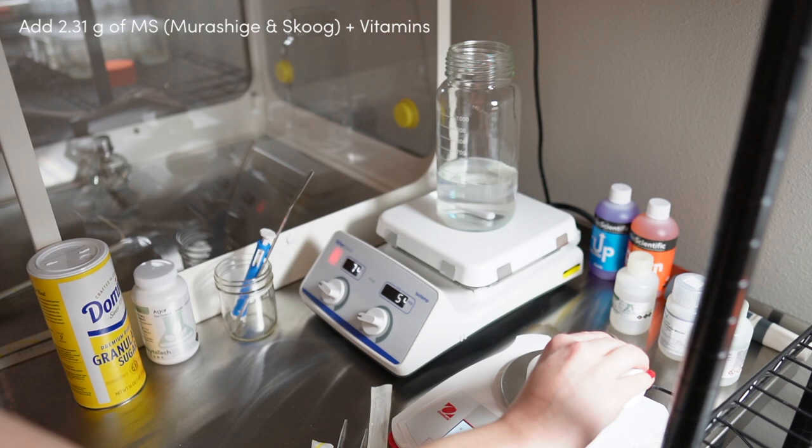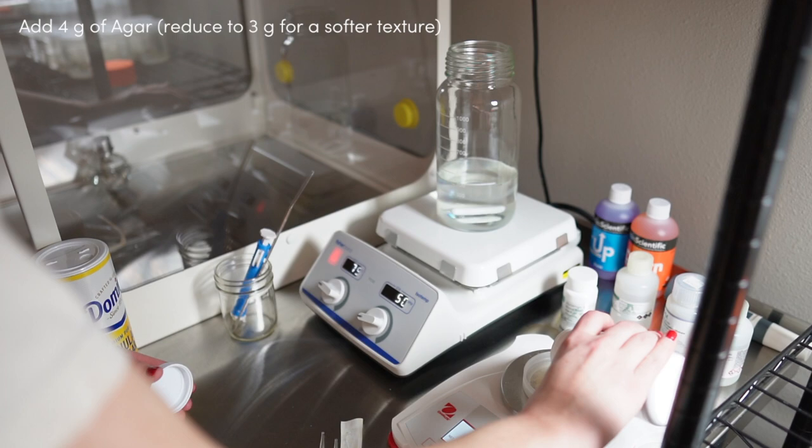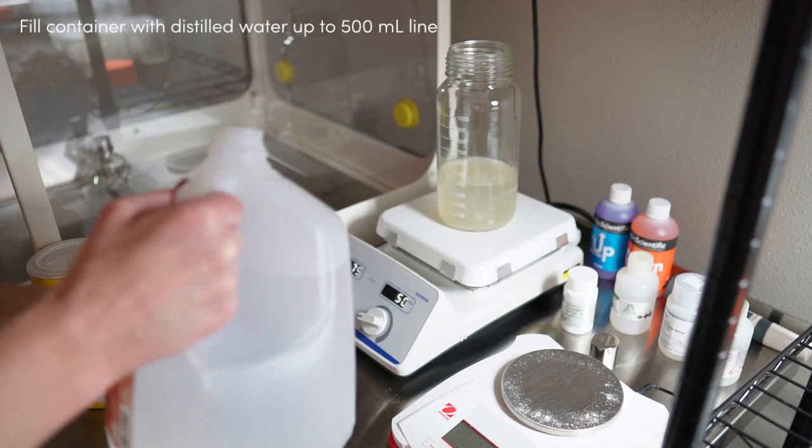I also add 2.3 grams of Murashige and Skoog, as well as 4 grams of agar. The protocol that I'm following actually only calls for 3 grams, but I like my media to be a little firmer. Last time I tried it with 3 grams and it turned out a little too watery for me.